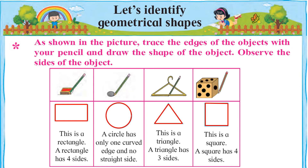Ab dekhte hain activity number two. Is activity mein aapko match sticks yaani maachis ki teeliyon ya lakdi ki pattiyon ki madad se alag-alag triangles aur four-sided figures banaane hain. Maine yahan par maachis ki teeliyon ka istemaal karke triangles aur four-sided figures banaye hain. Isi tarah aapko bhi triangles aur four-sided figures banaane hain.